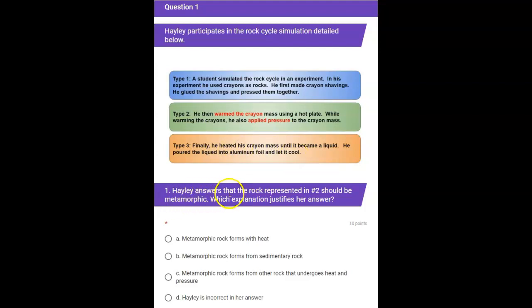The question is: Haley answers that the rock represented in number 2 should be metamorphic. Which explanation justifies her answer?